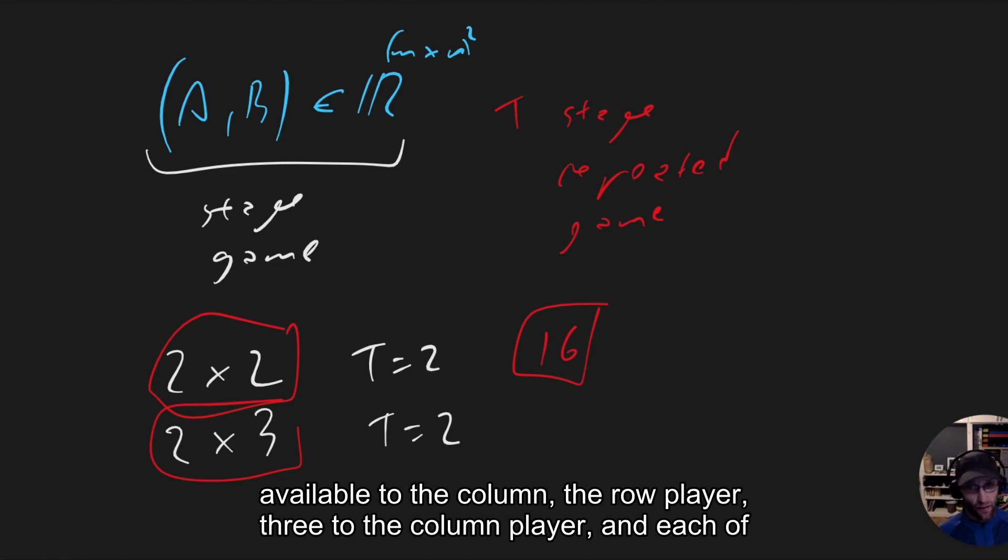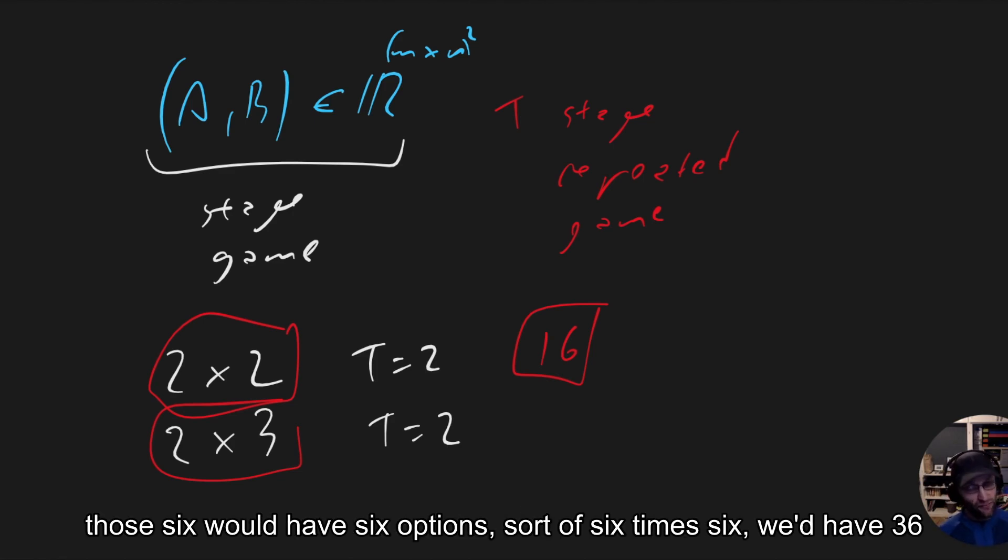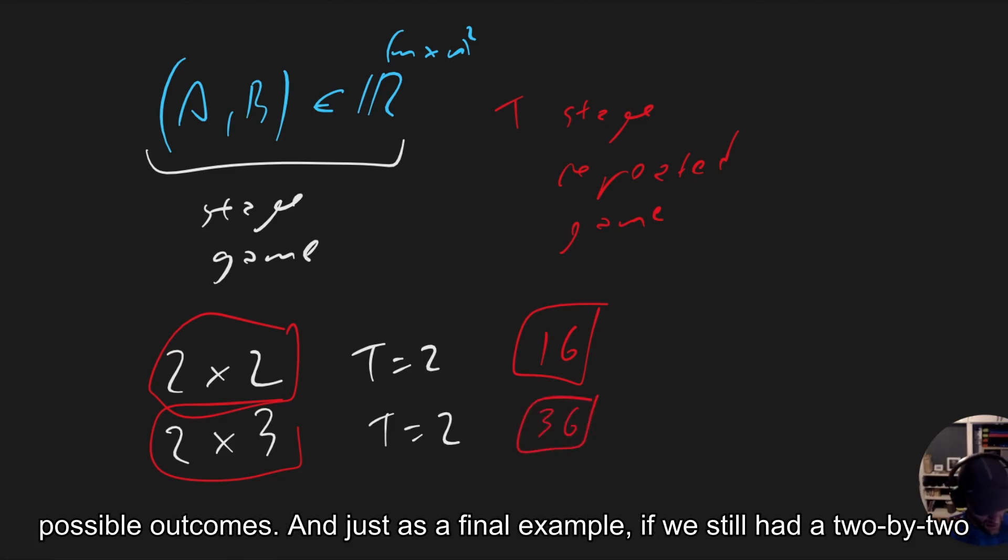And each of those six would have six options. So we'd have six times six, we'd have 36 possible outcomes.